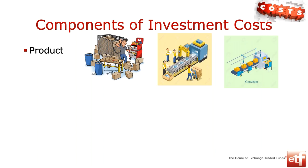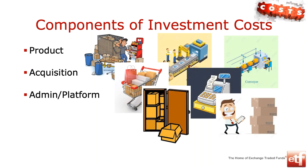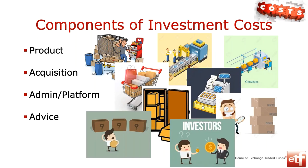The first thing is the product cost - actually putting together an investment product. What goes into the manufacturing of such a product? Then we've got to go and buy those products - a second layer of investment costs. We also need to store them - our admin fee or platform fee - and have a record of what we actually have. Maybe there's a component of advice fee. And there are some other costs we'll look at right at the end for our five components.